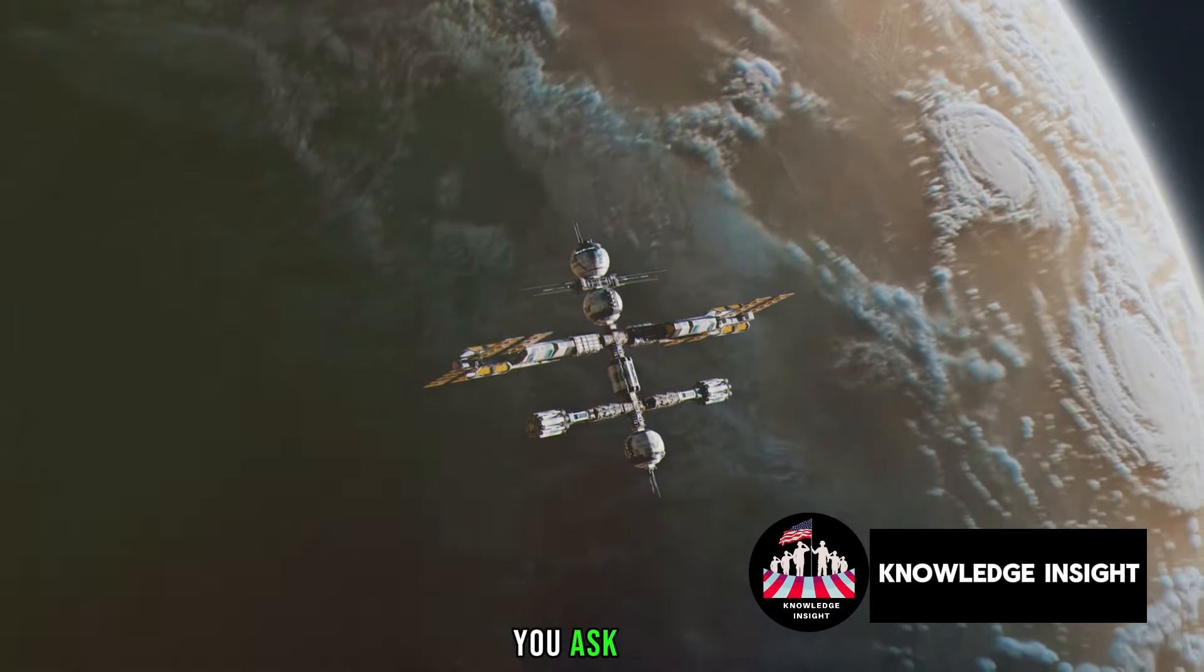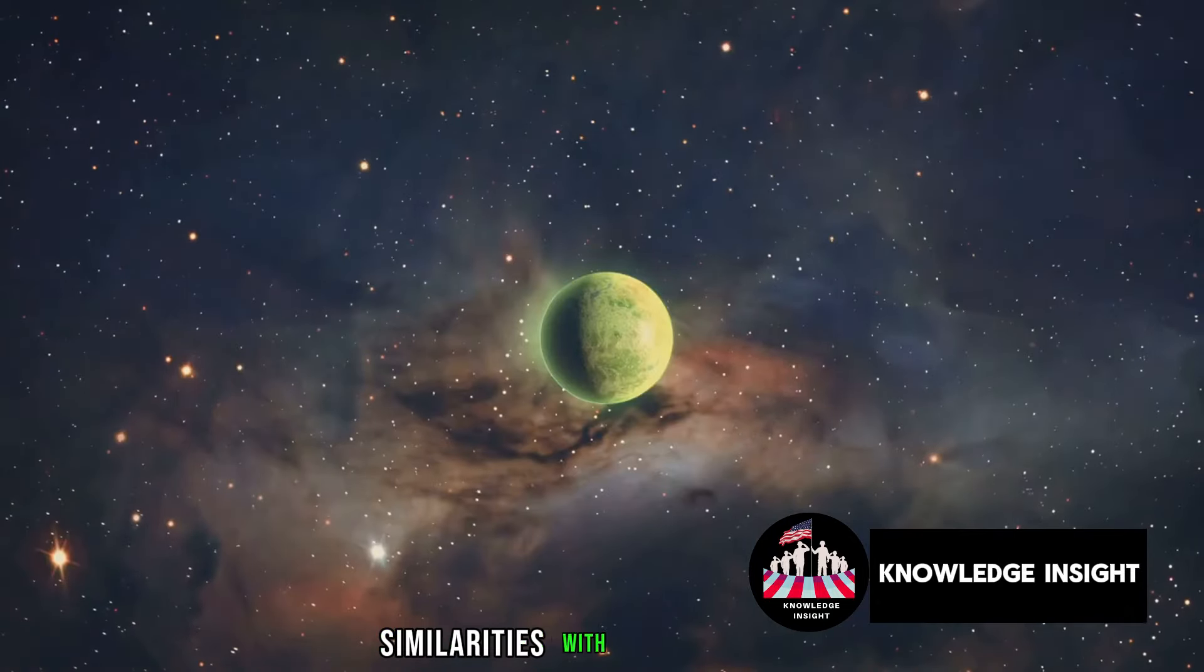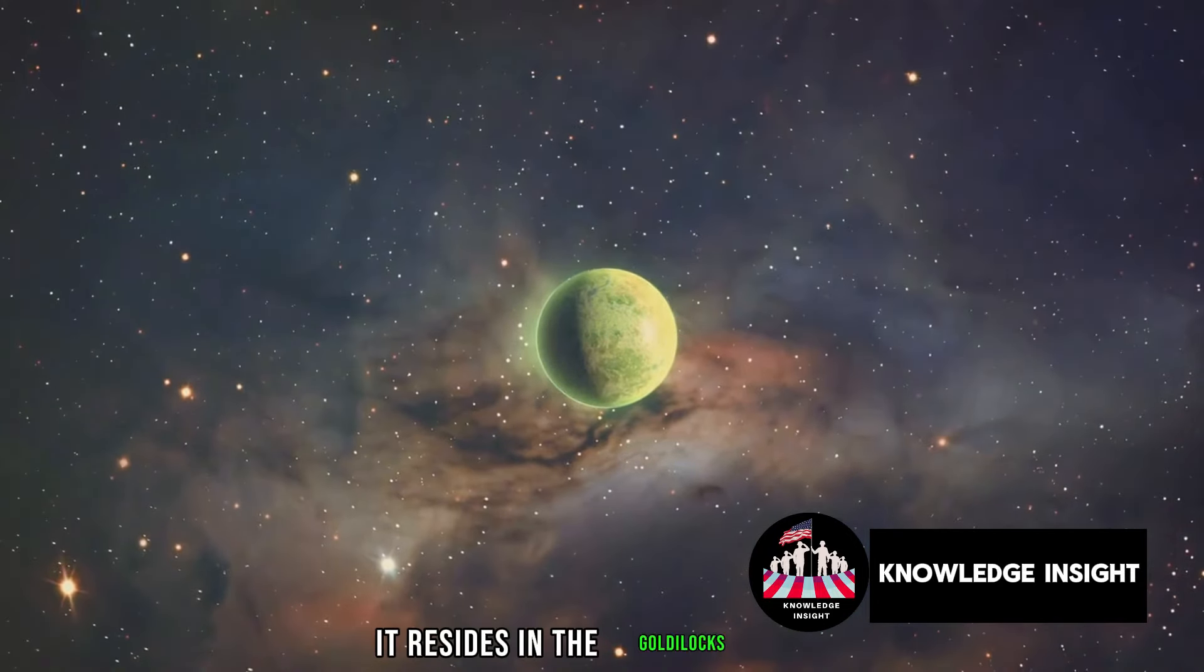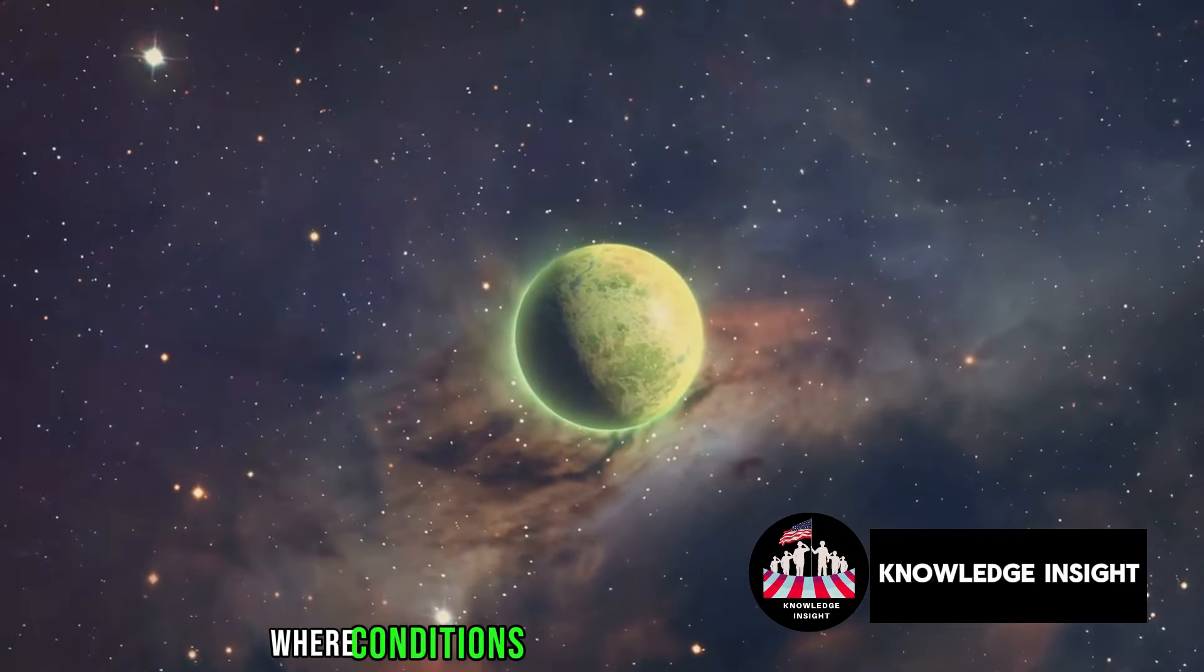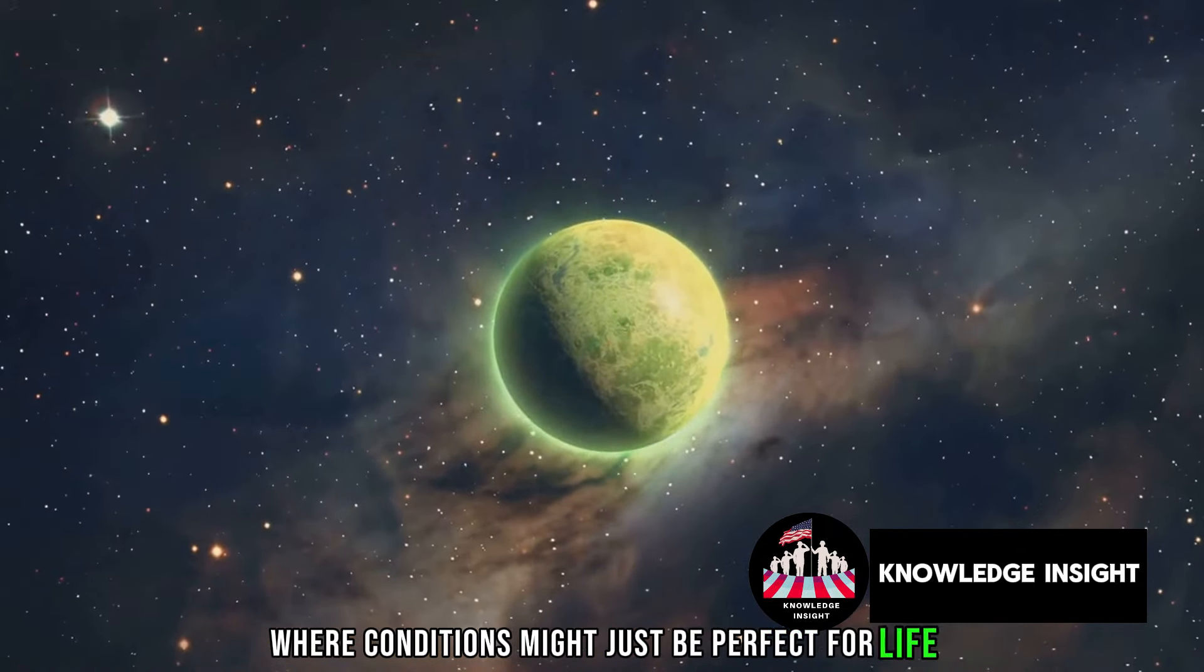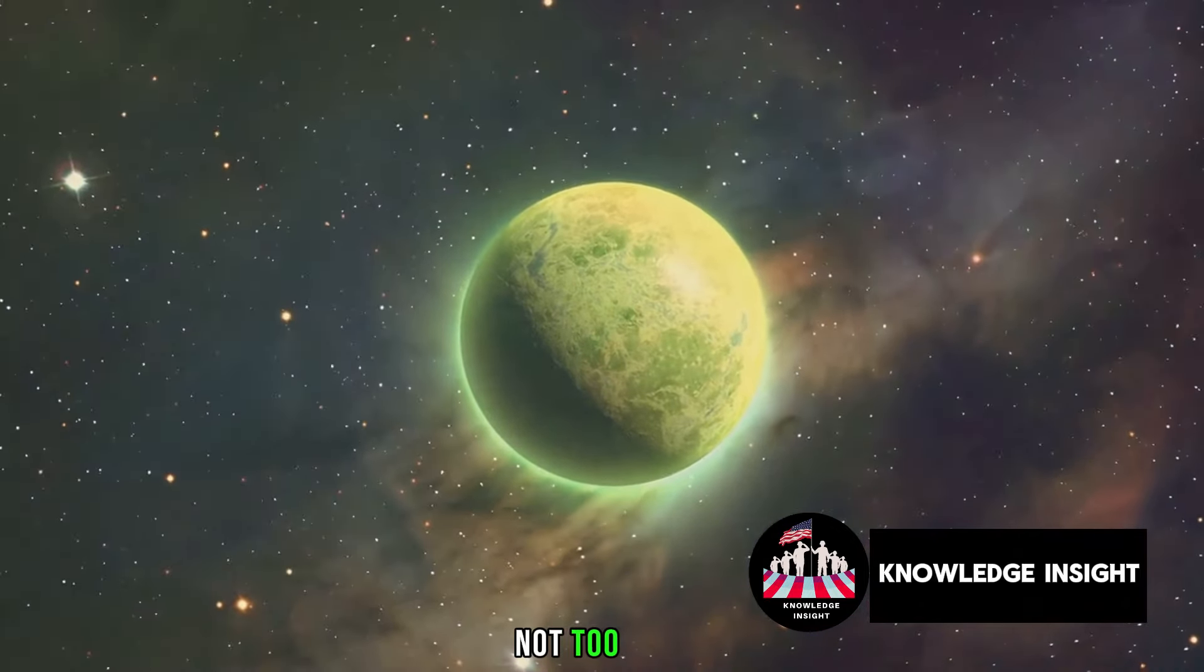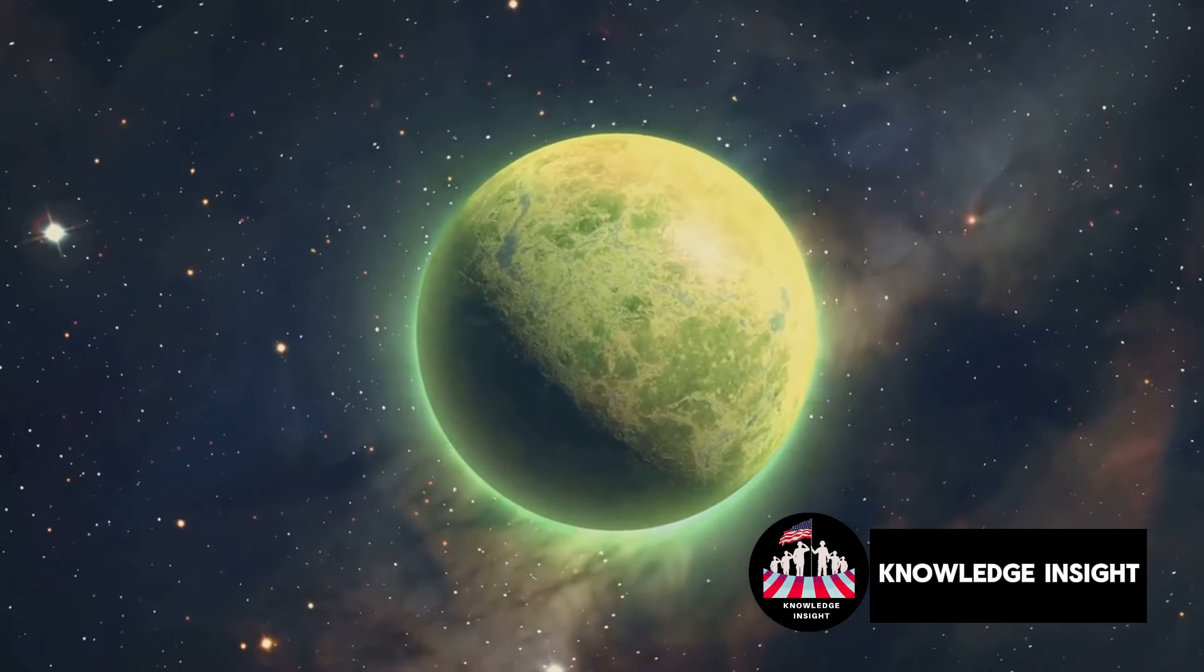What makes this exoplanet so special, you ask? Well, it's a world that shares uncanny similarities with our own Earth. It resides in the Goldilocks zone, the habitable region around a star, where conditions might just be perfect for life. Not too hot, not too cold, but just right. But that's not all.